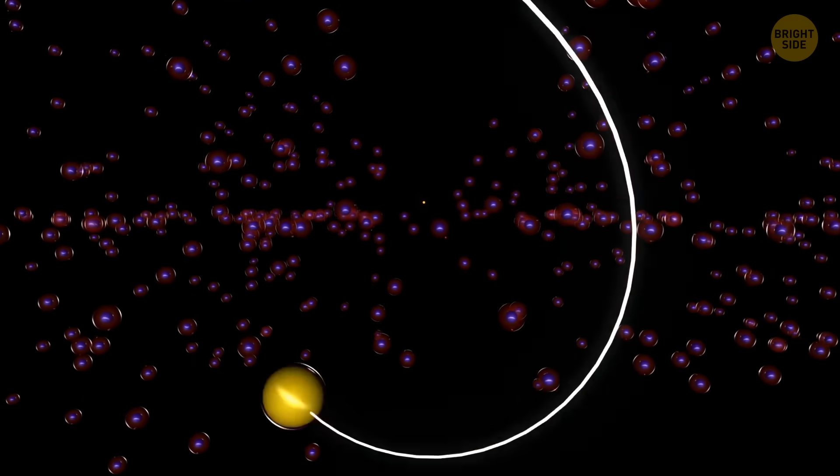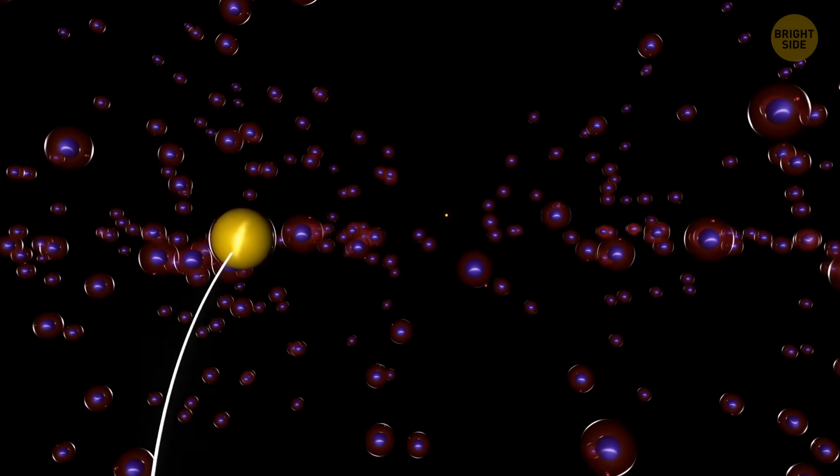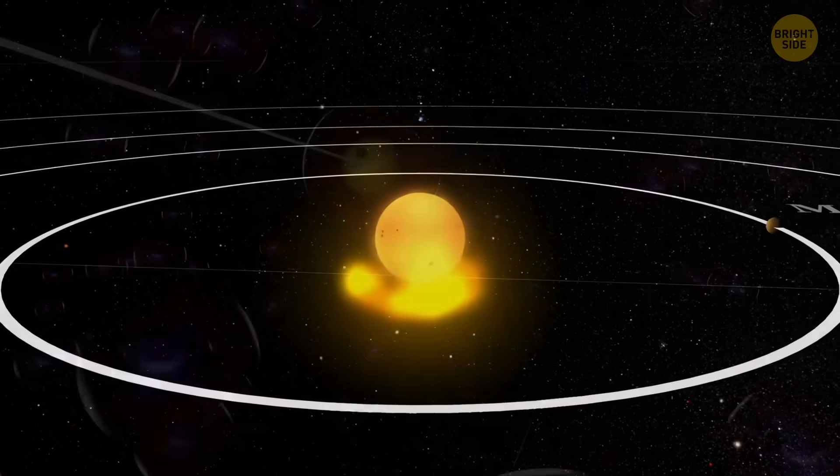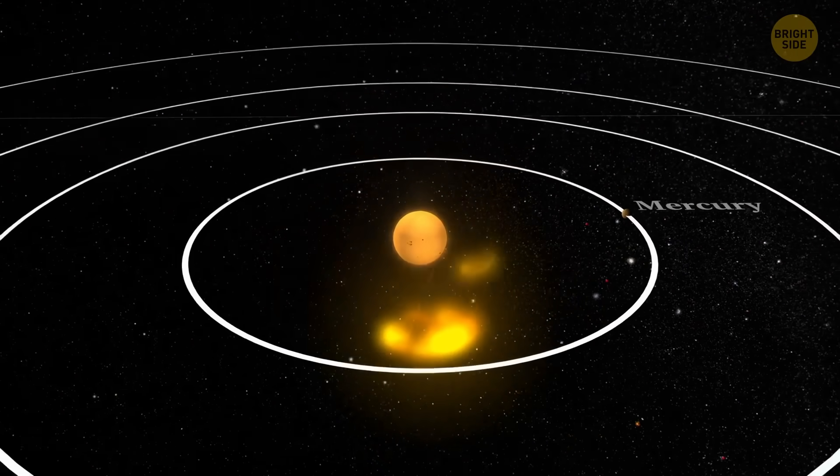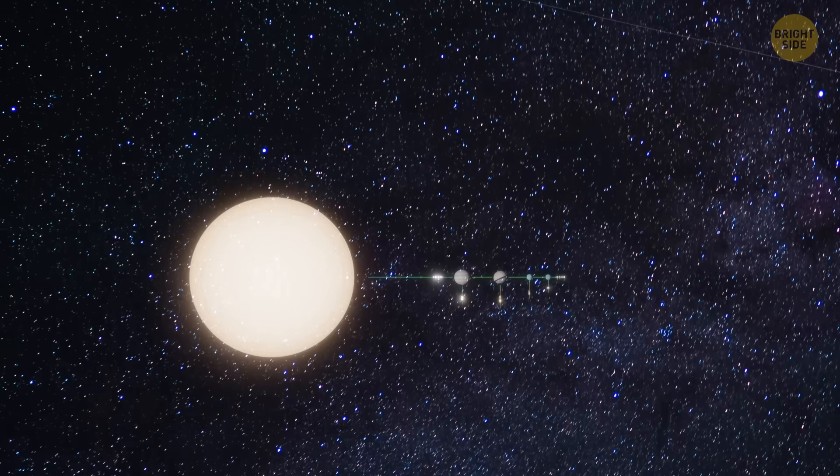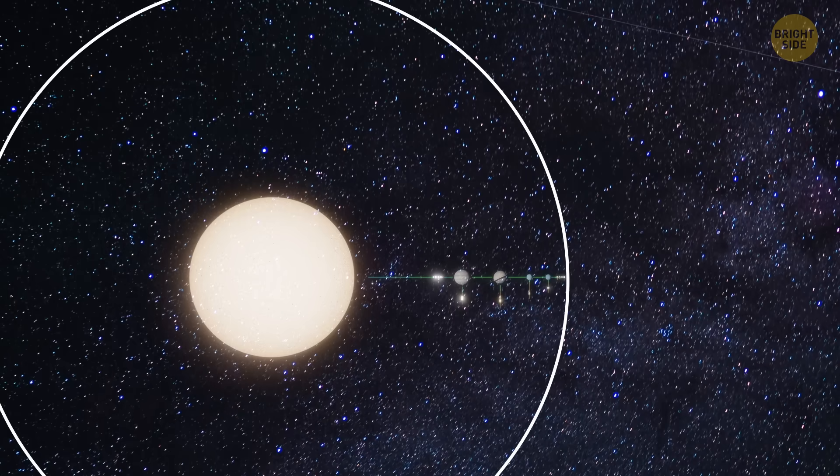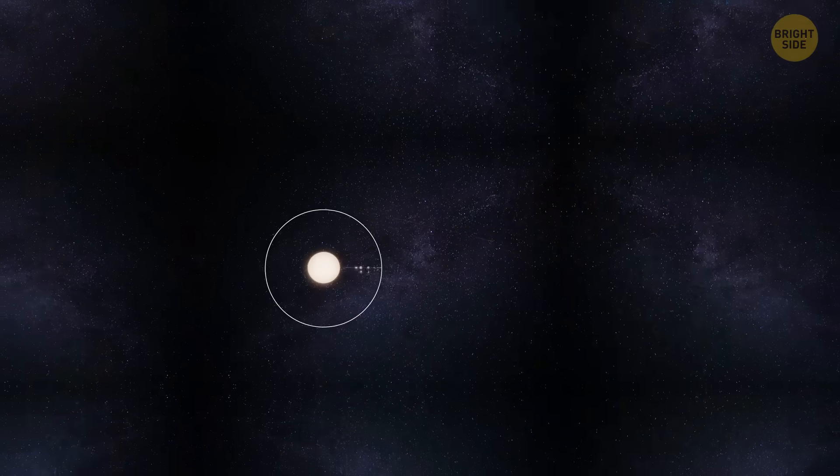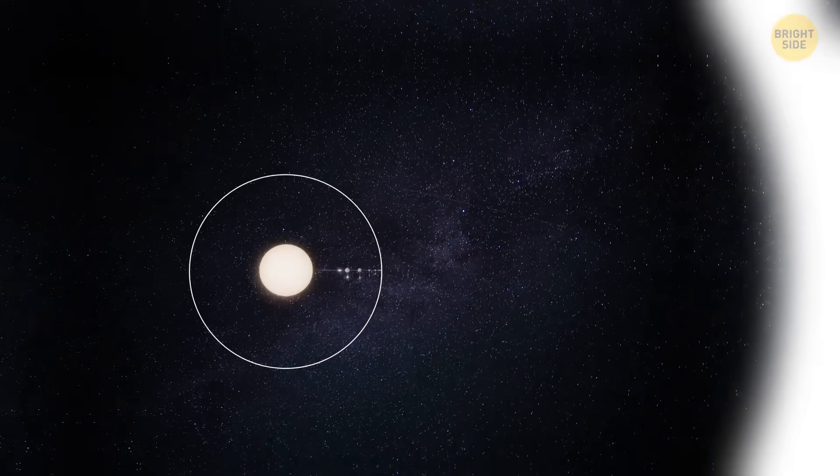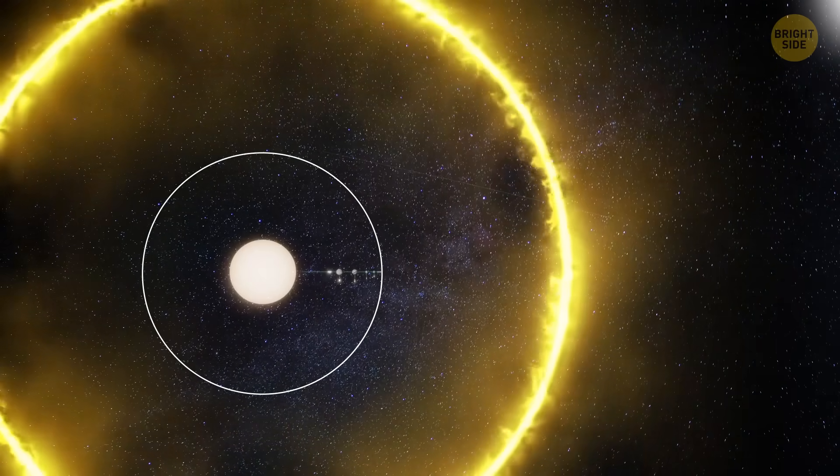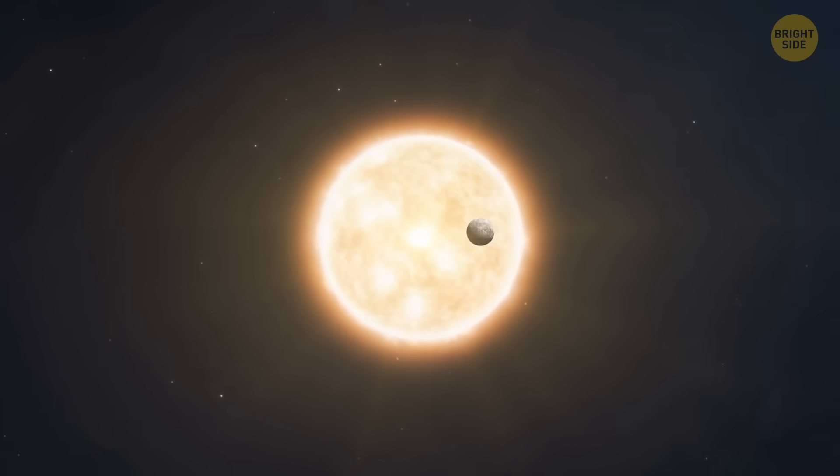As the heliosphere moves through space, it creates a bow shock, similar to the wave that forms in front of a ship moving through the water. So, depending on how you define it – by planets, by the Oort cloud, by gravity, or by the Sun's magnetic influence – the edge of the solar system can mean very different distances.